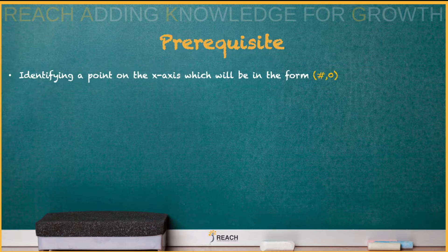If you know how to identify a point on the x-axis, it's going to be some number comma zero.